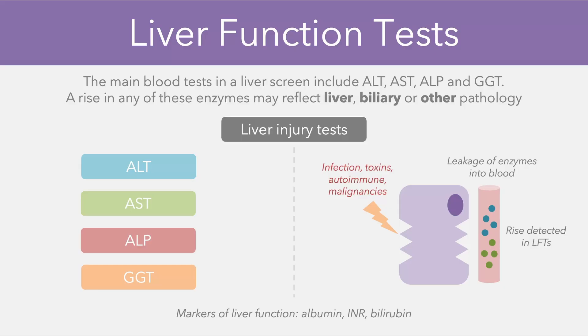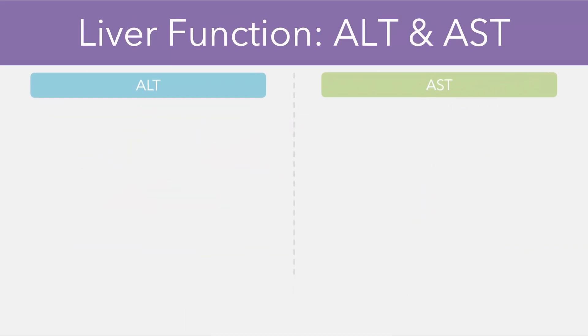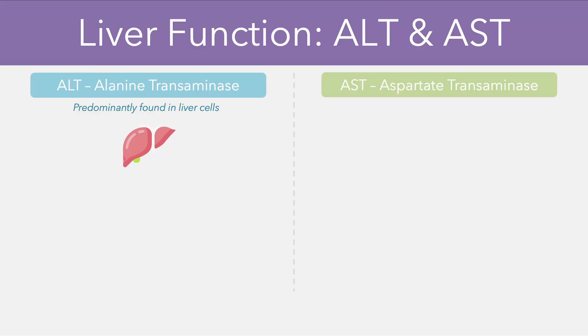If we know the locations of the cells which contain each enzyme, we can work out where the pathology is when we get a rise in that enzyme. To illustrate this, let's take a look at ALT and AST first, which stand for alanine transaminase and aspartate transaminase, respectively. ALT is found predominantly in the liver cells, or the hepatocytes, and if we get injury to these hepatocytes, it will result in the enzyme being leaked.